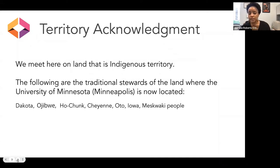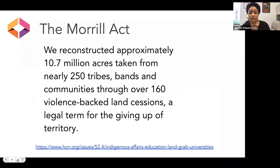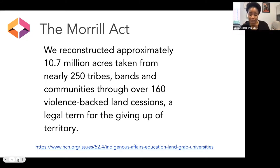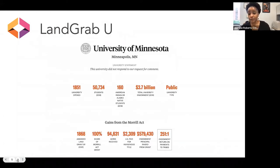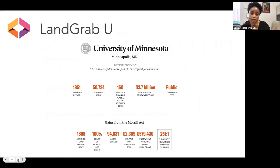Sometimes territory acknowledgements can come across as a little performative. Not only do we need to acknowledge the traditional stewards of this land, but also how do we benefit from the theft of indigenous lands to this day. There's a project called the Land Grab University Project — journalist Tristan Autown and historian Bobby Lee spent about two years tracking how 11 million acres of land were taken from more than 250 indigenous tribes to help fund land grant universities in the late 19th century. The University of Minnesota still benefits to this day from what we're really calling an expropriation of wealth from indigenous lands to university endowments.